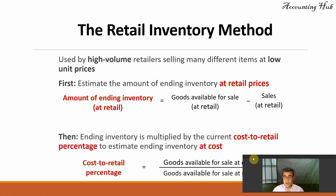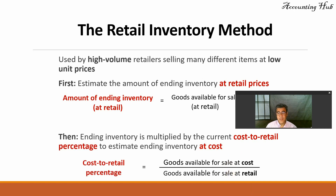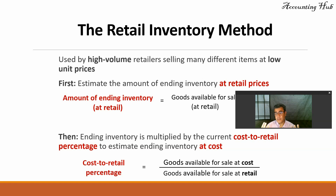And how do we go from retail to cost? We take the goods available for sale at cost and divide it by the goods available for sale at retail. This gives us the cost-to-retail percentage, which looks similar to a gross profit margin.